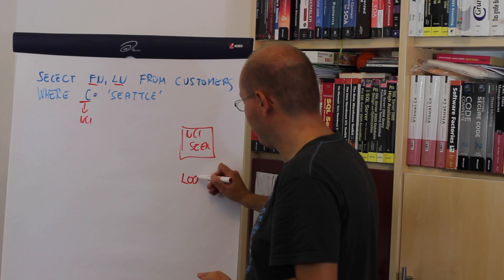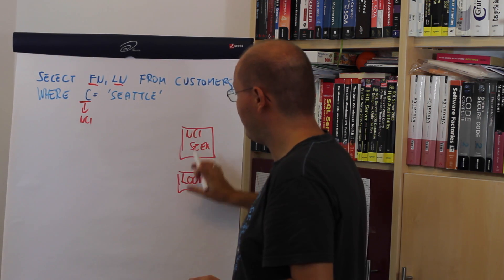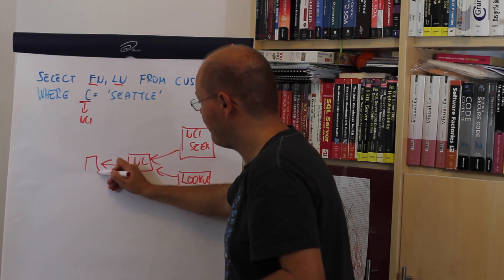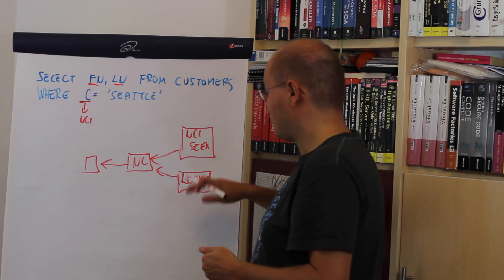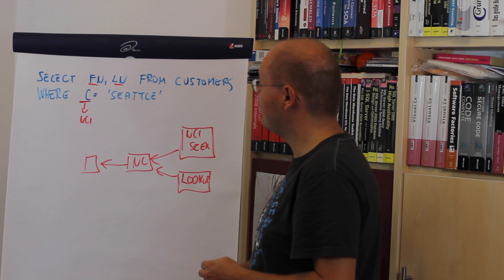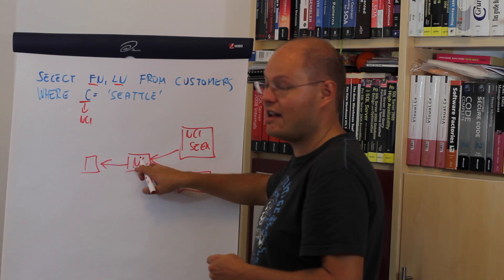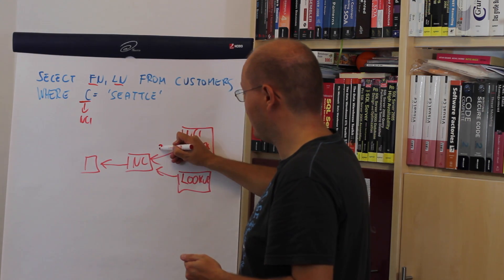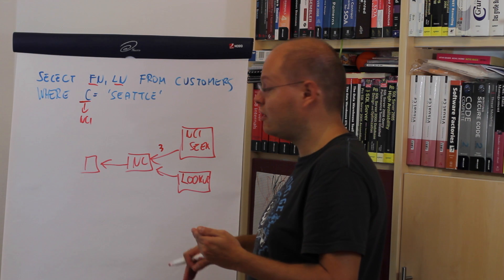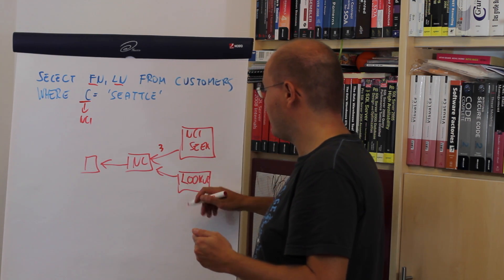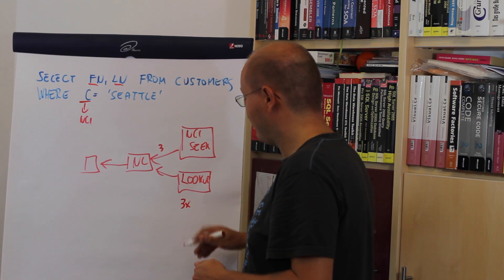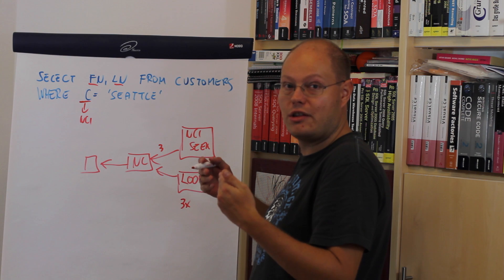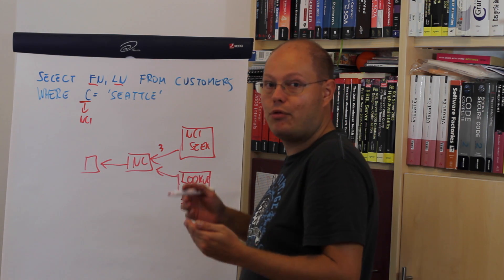Below the non-clustered index seek operator we have a lookup operator, and both operators are joined together through a nested loop operator. Every time you see a lookup operator in the execution plan — a clustered key lookup or a row identifier lookup on a heap table — you will also see a nested loop operator in the query plan. Imagine we are getting back three customers from Seattle. This means SQL Server has to perform the lookup operator three times for every record returned from the outer non-clustered index seek.